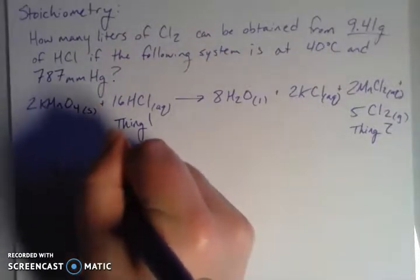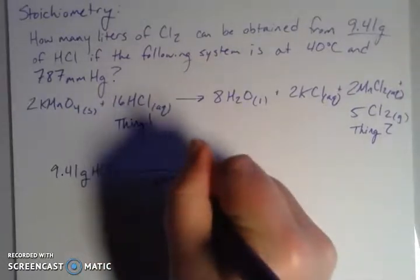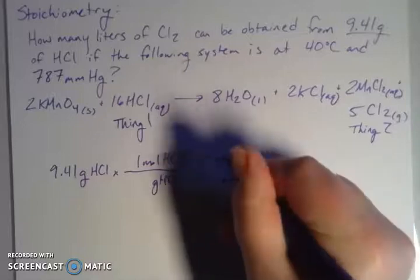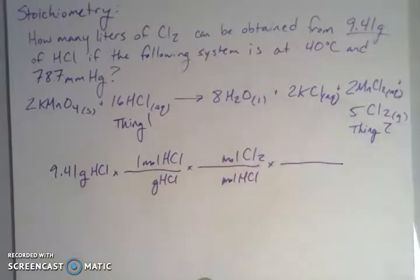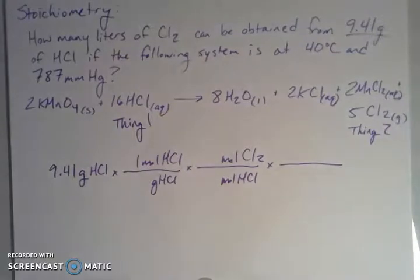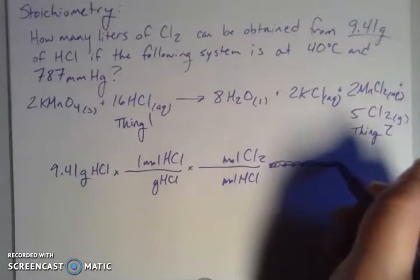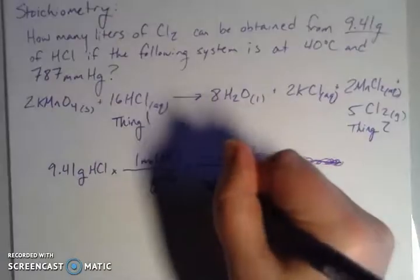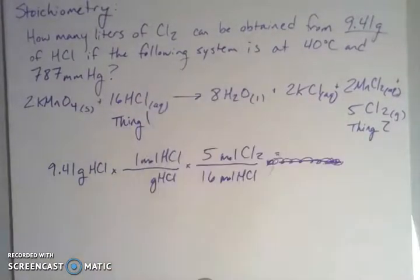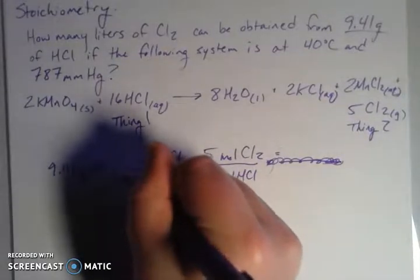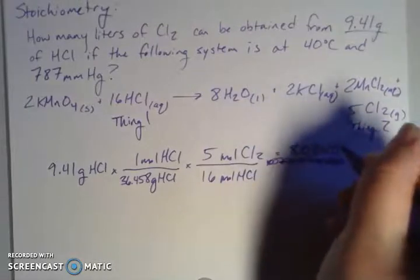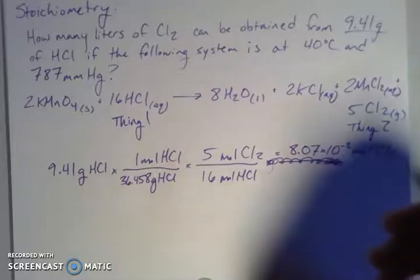Going grams to moles, then moles to moles using the stoichiometric ratio from the balanced equation: 16 moles of HCl gives 5 moles of Cl₂. The molar mass of HCl from the periodic table is 36.458 g/mol. Plugging that in, I get 8.07 × 10⁻² moles of chlorine gas, which will be my n value.